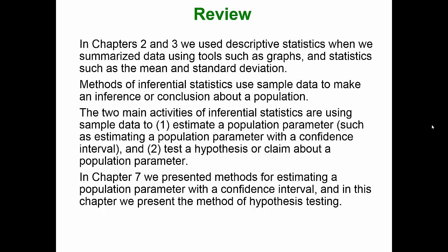Methods of inferential statistics use sample data to make an inference or conclusion about a population. The two main activities of inferential statistics are using sample data to: one, estimate a population parameter such as estimating a population parameter with a confidence interval, and two, test a hypothesis or claim about a population parameter. In chapter 7 we presented methods for estimating a population parameter with a confidence interval, and in this chapter we present the method of hypothesis testing.